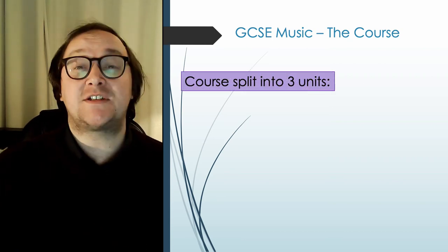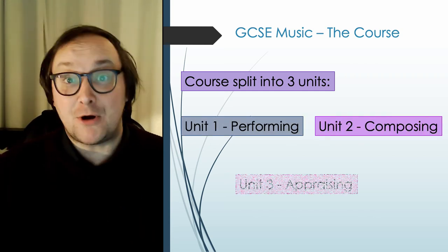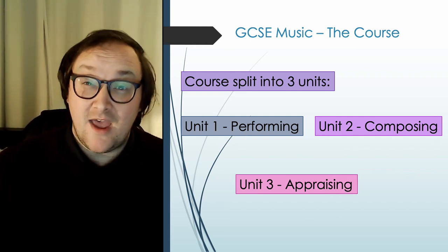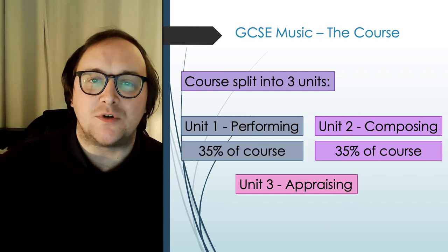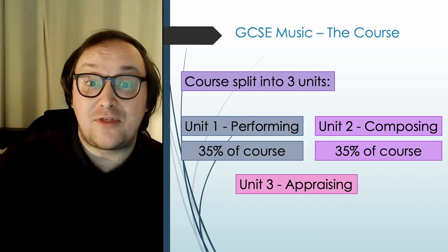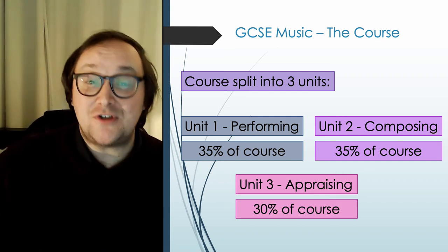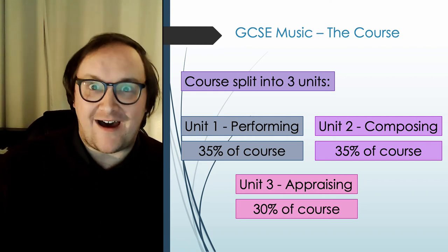You will be taught by both myself and Miss Cross for different elements of the course. GCSE music is split into three units focusing on the three main areas of music: performing, composing and appraising. They are split pretty equally in terms of course weighting with Unit 1 and 2 — the performance and composition — taking up 35% of the course each, and appraising taking up the other 30%. This means that music students will have completed over two thirds of the course before they walk into the exam room, giving them an excellent chance of coming out with a high grade.